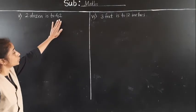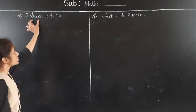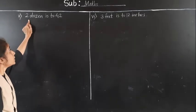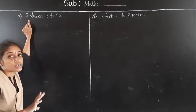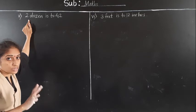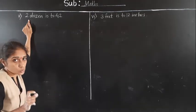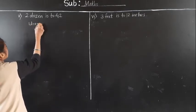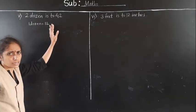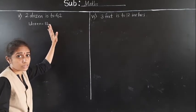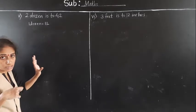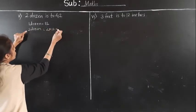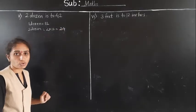Next example: 2 dozen to 42. This is given in dozens and the second is just a number. 1 dozen means 12 things — for example, 1 dozen eggs means 12 eggs. So 2 dozen means 2 multiplied by 12, which is 24 things.